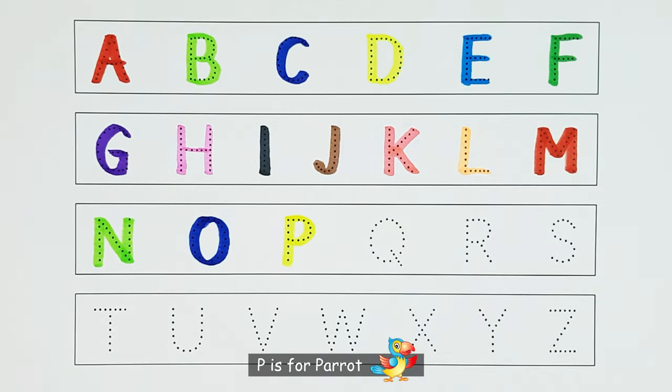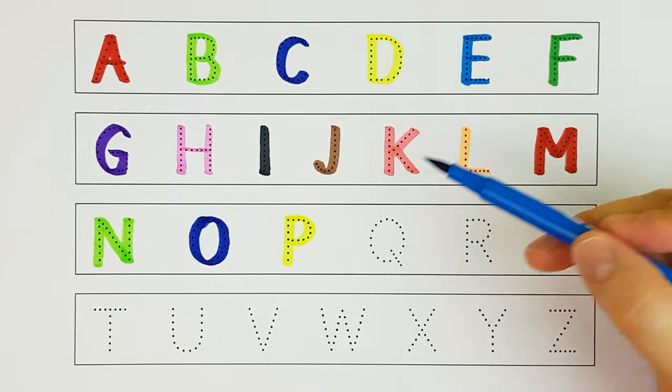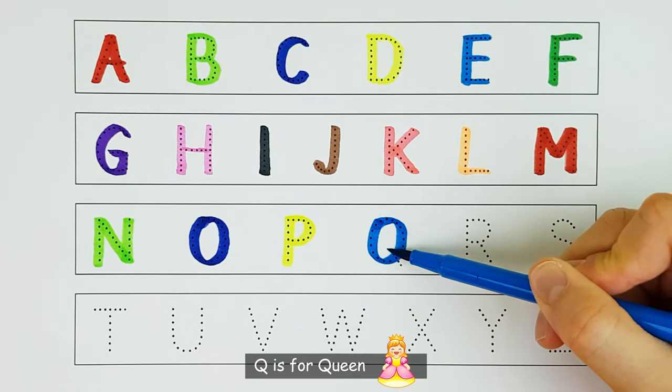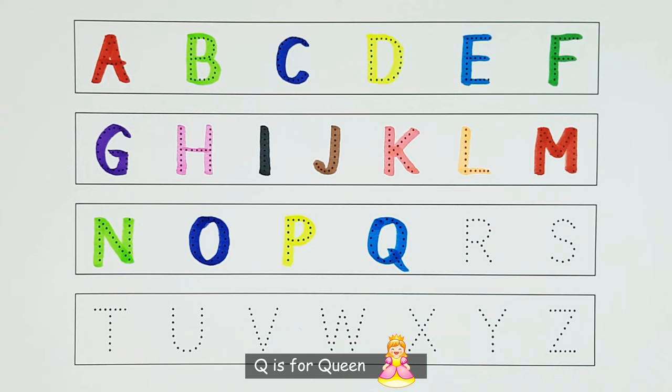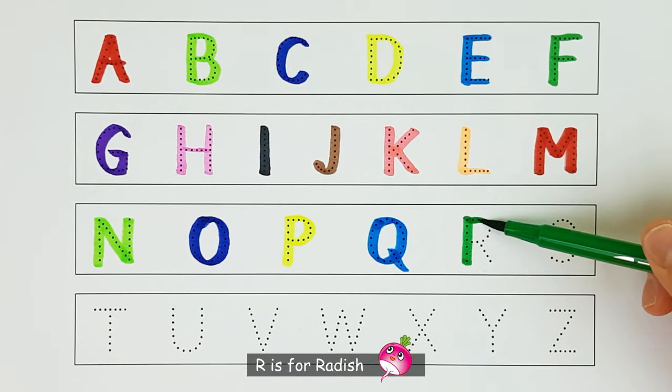P. P is for parrot. P. Q. Q is for queen. Q. R. R is for radish. R.